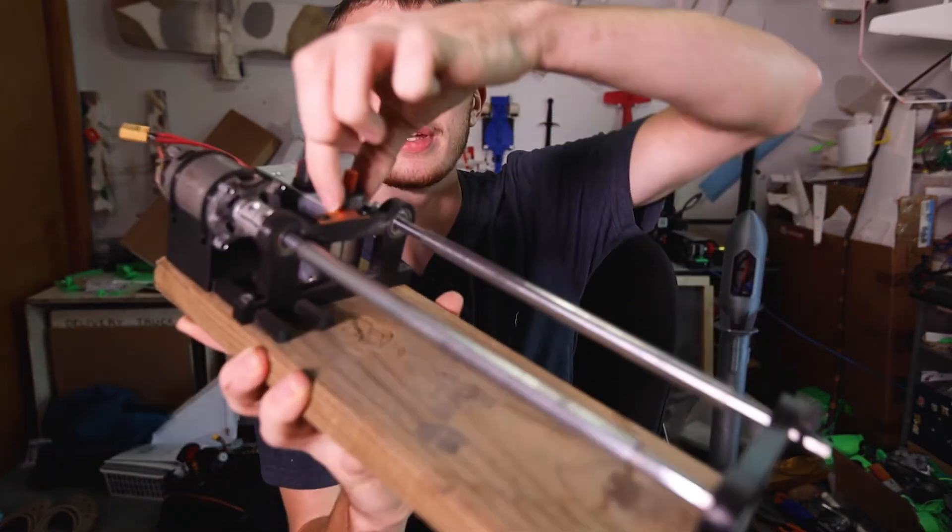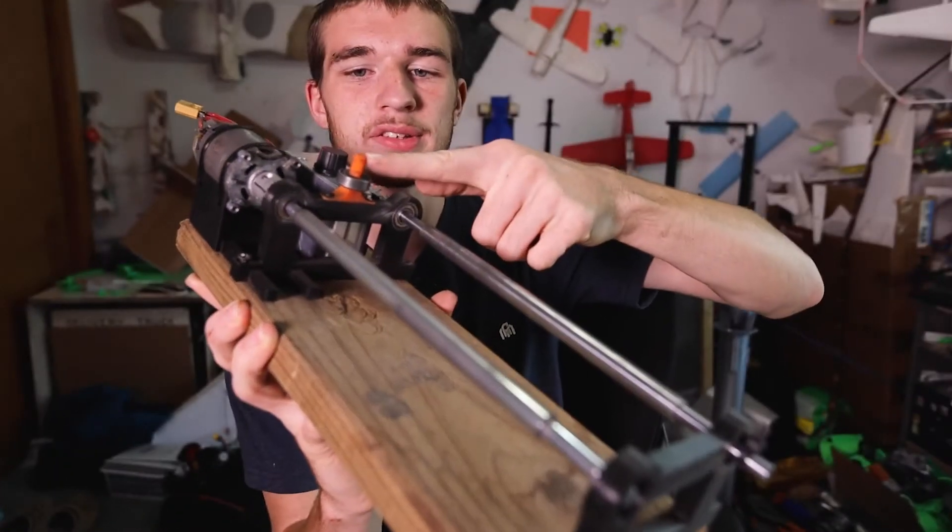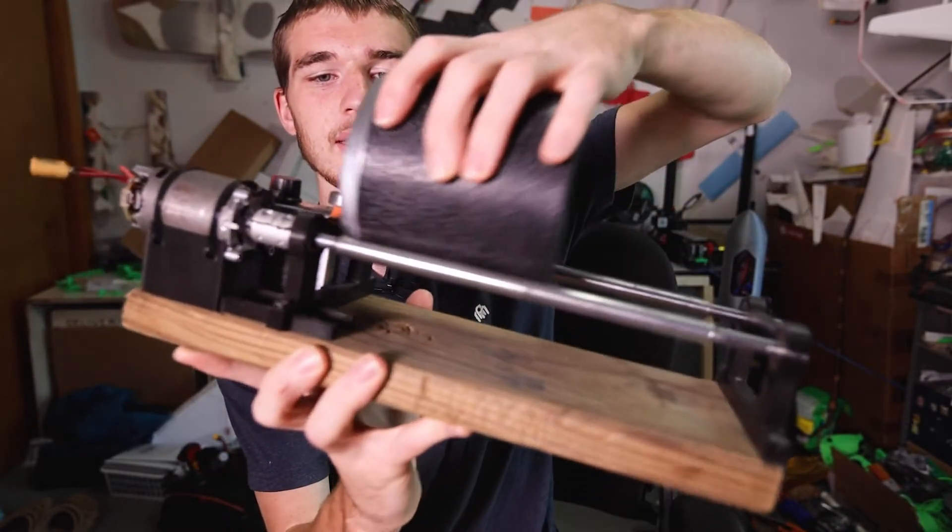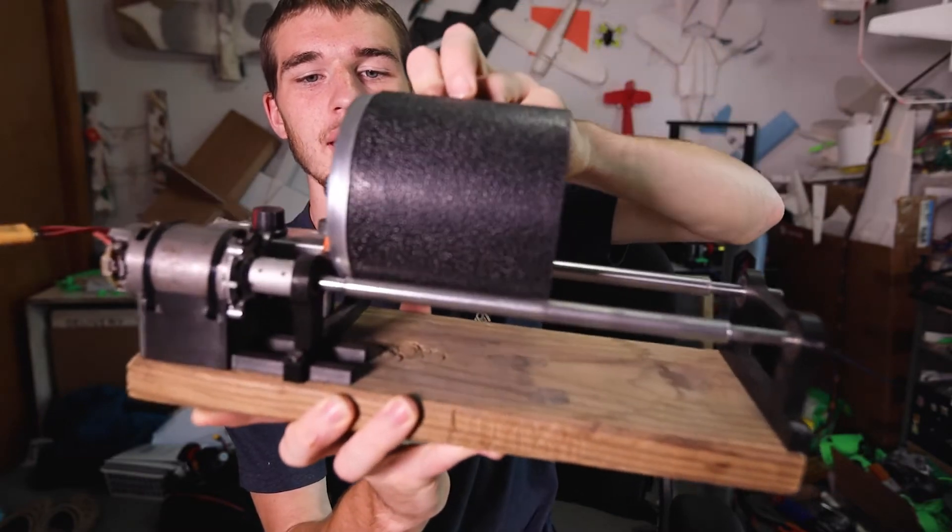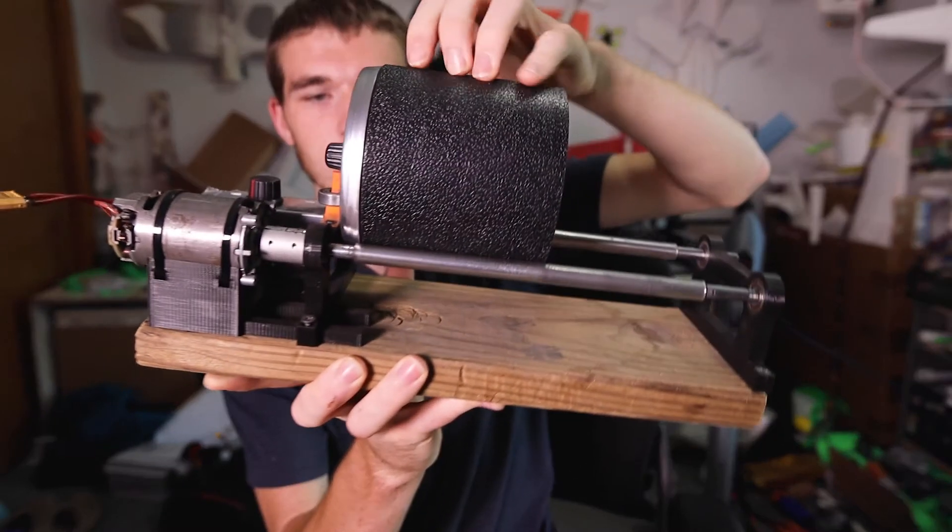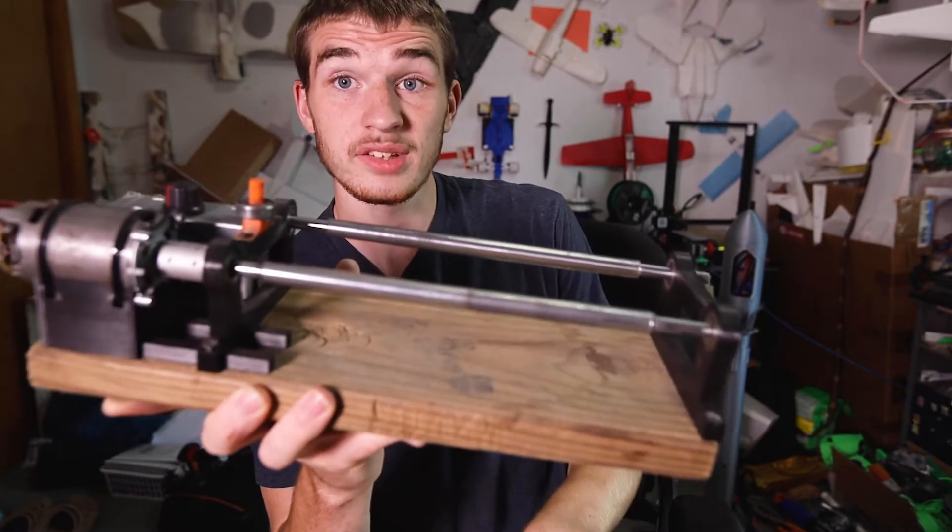And then here, this little orange piece, that is the piece that keeps this against it so when it rolls, it rolls against the bearing and it keeps it from coming off. So it's just that simple.